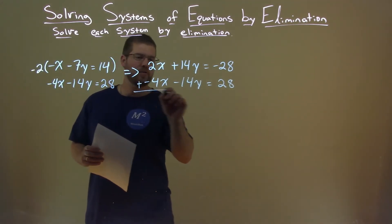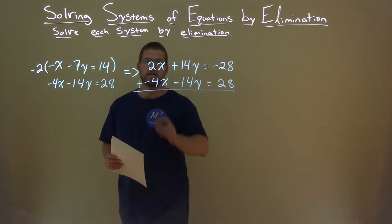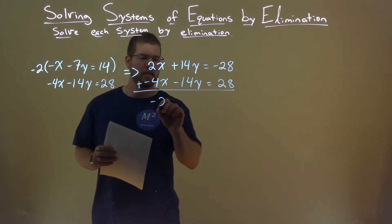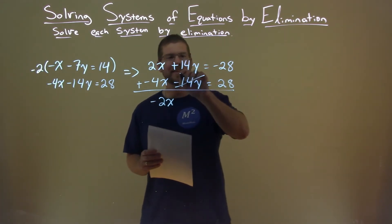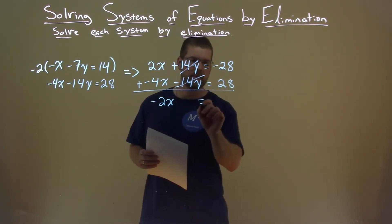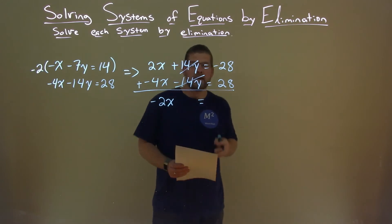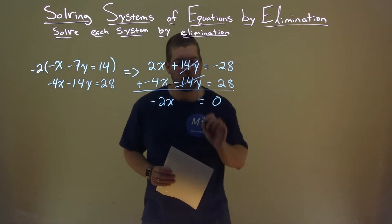We now add the two equations here. 2x plus a negative 4x is a minus 2x here. 14y plus a negative 14y eliminates the y. That was the goal. Negative 28 plus a 28, be careful, also a 0.